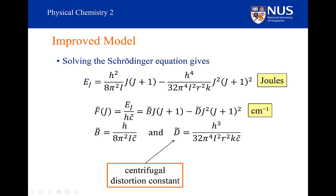If I write this in terms of B and D and in terms of wave numbers, my energy is equal to B times J(J+1) minus D into J squared times (J+1) all squared.